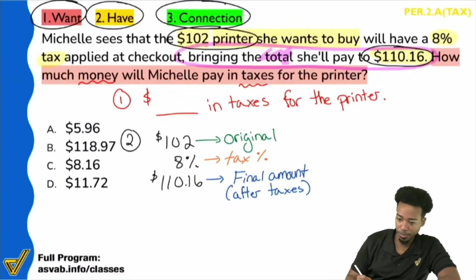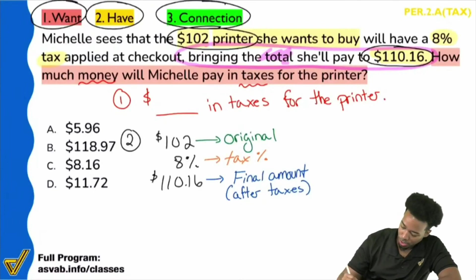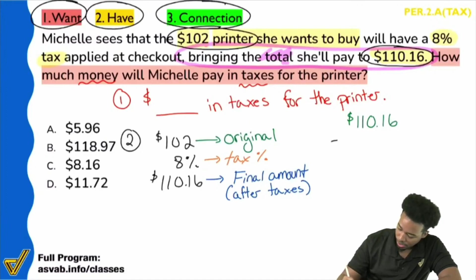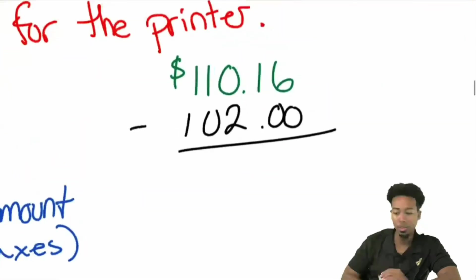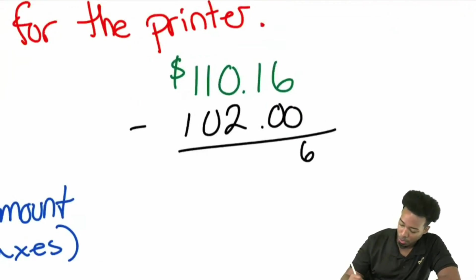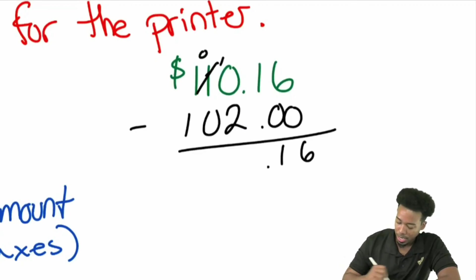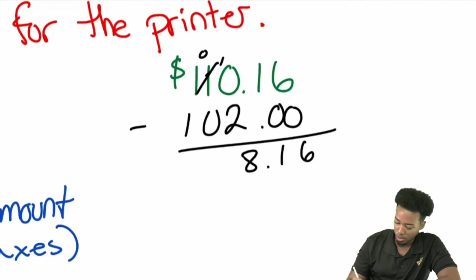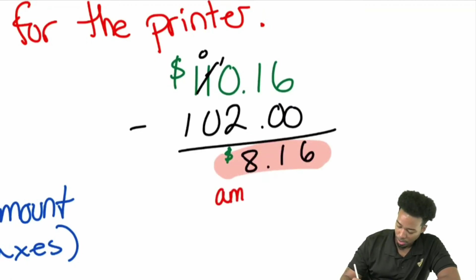So let's go: $110.16 minus $102. Six minus zero is six. One minus zero is one. Zero minus two — can't do that, so we borrow: ten minus two is eight. Zero minus zero is zero. That gives us $8.16, which is the amount of the tax.